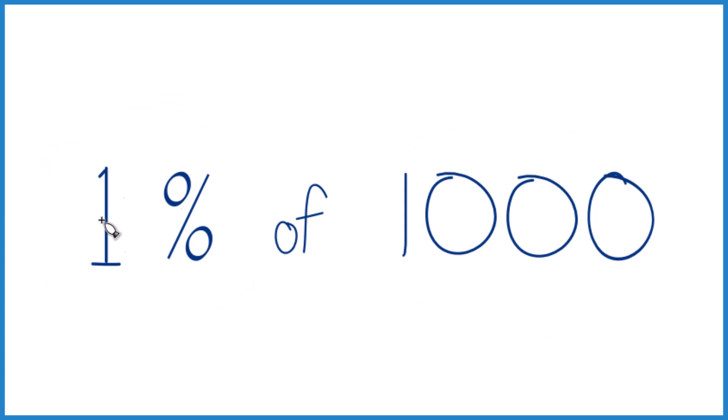And the way I think about it, 1% is 1 per 100. So if we had just 100, we'd have 1. But since we have another decimal place there, we have 1,000, it's going to be 10. So 1% of 1,000 is 10.